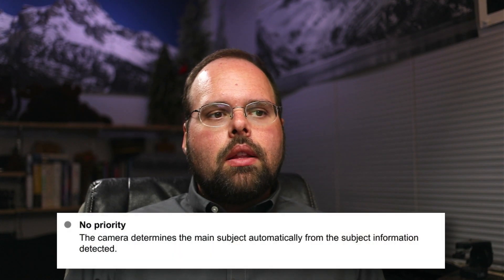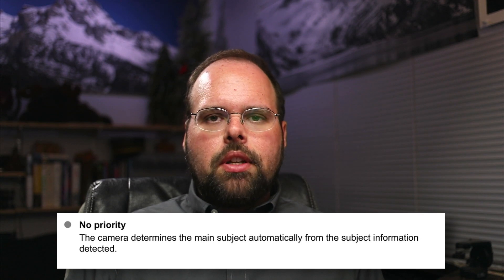The final option is no priority. According to the manual, 'the camera determines the main subject automatically from the subject information detected.' Unfortunately, this is where things become a mess — I have no idea what that means, and it doesn't tell us much about the exact behavior. Is it still detecting animals and people? In my testing, no priority tends to be far more inconsistent than people or animals. I think what it's doing is starting with the old-school closest or largest subject autofocus algorithm, and then as the camera processes the scene and detects a person or animal, maybe it will jump to that.